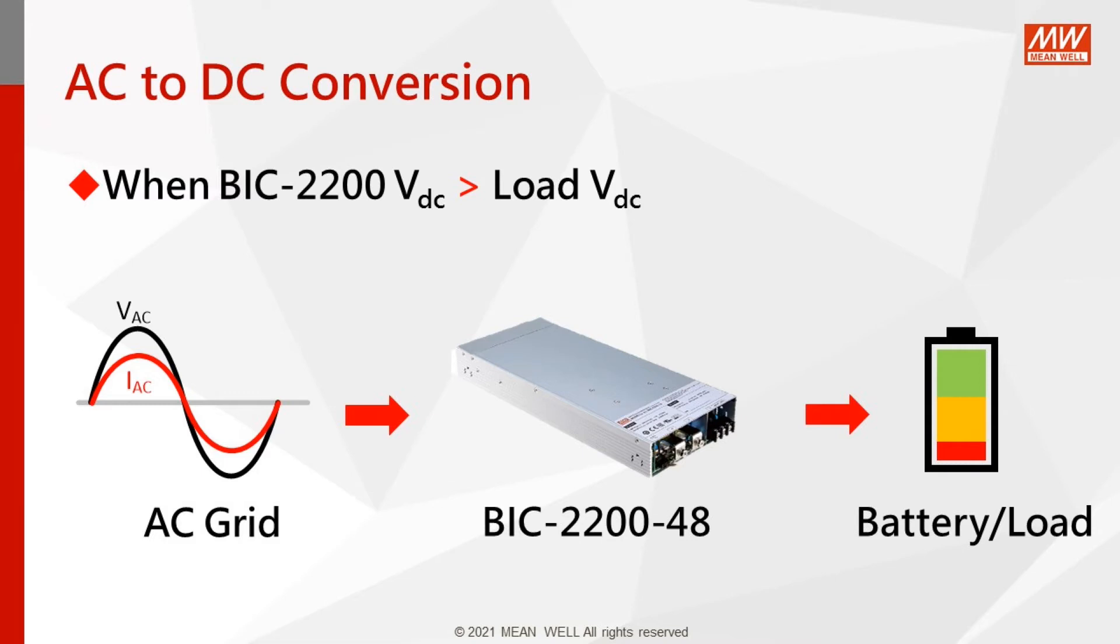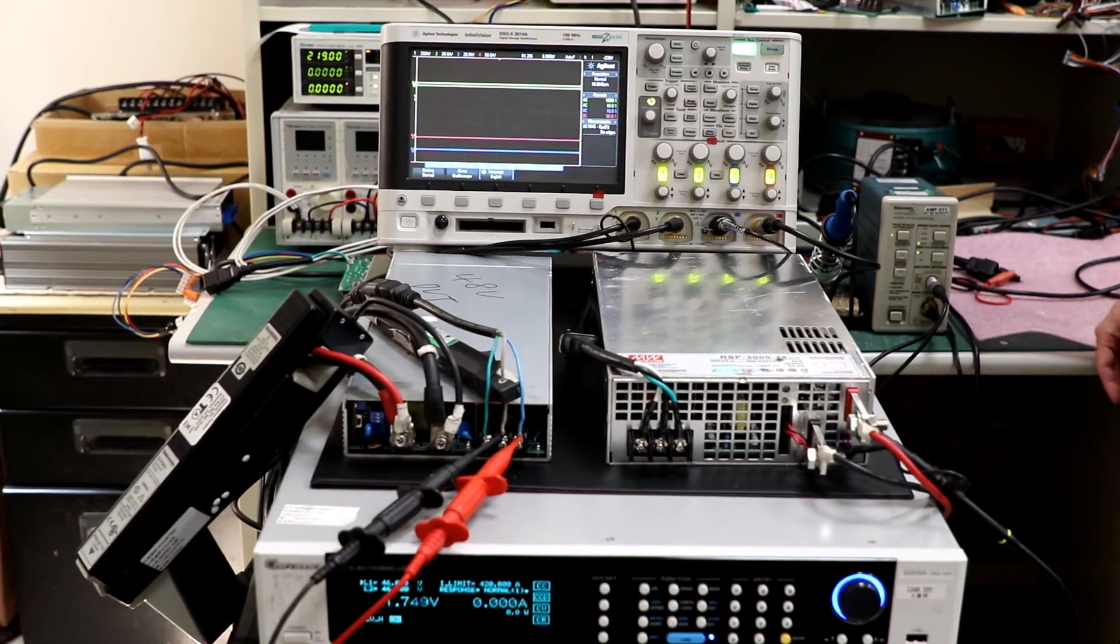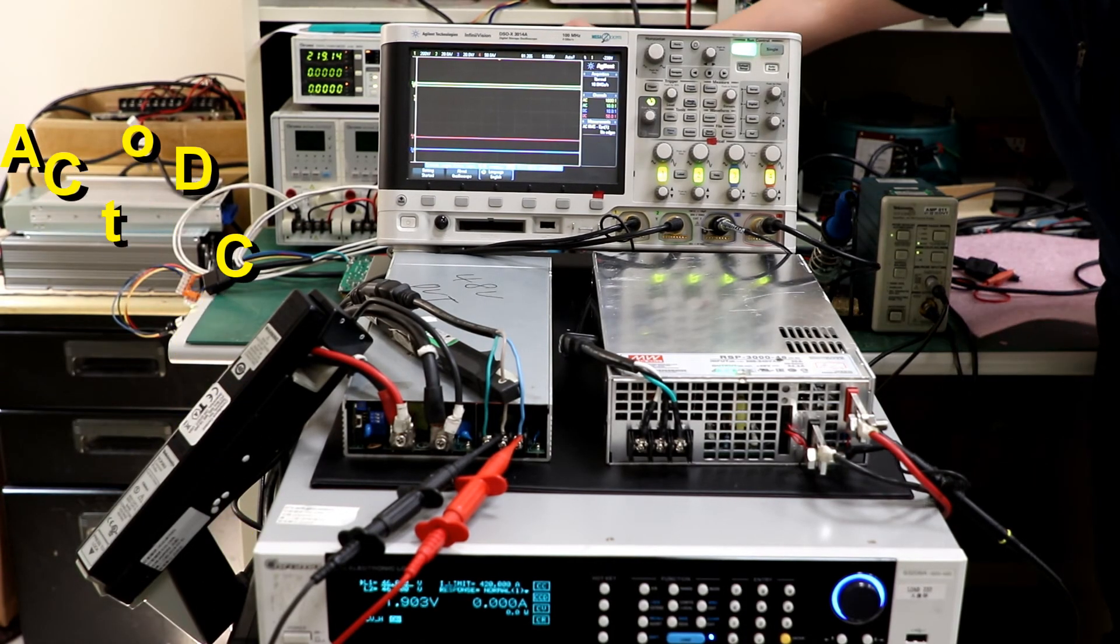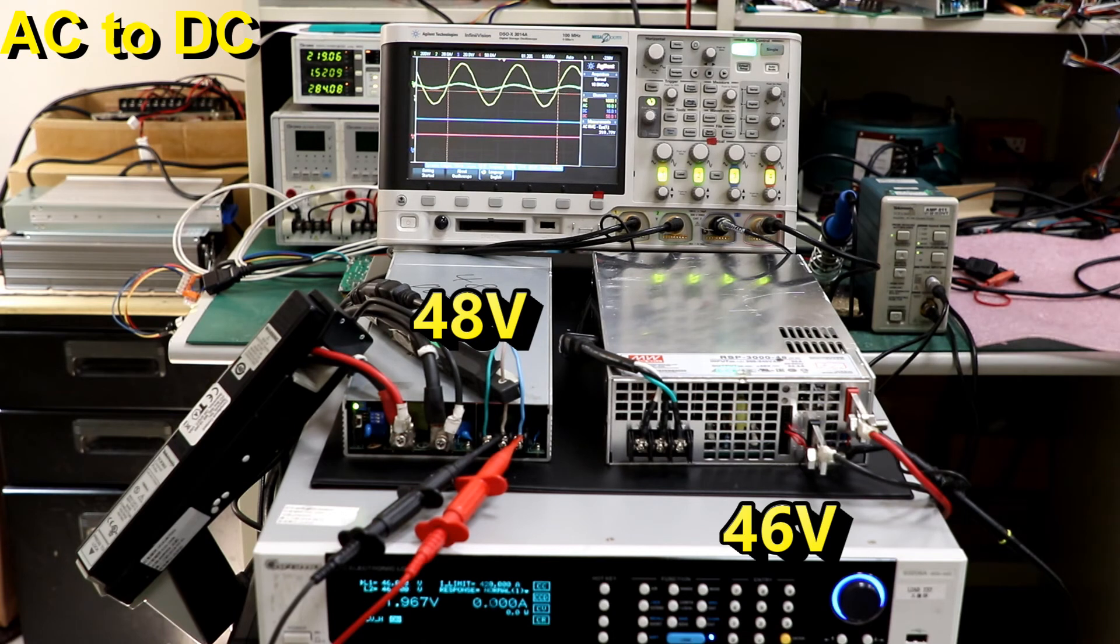Next, we will be doing demonstrations. The first is AC to DC conversion. Connect a DC electronic load to a BIC-2200, 48 volts. Then setting the load at CV mode and 46 volts will force the BIC to do AC to DC conversion.